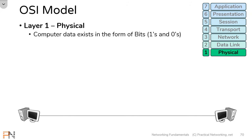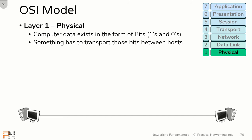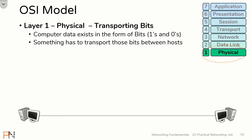Data on computers exists in the form of bits — that is, ones and zeros. The first thing that needs to exist for these hosts to share data with one another is something has to transport those ones and zeros from one computer to the next. That something is the physical layer. The goal of the physical layer is transporting bits, and anything that contributes to moving ones and zeros from one computer to another is considered a Layer 1 technology.